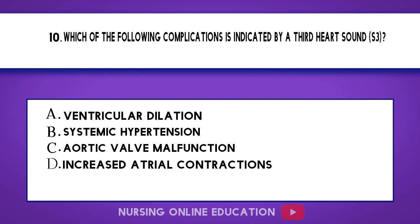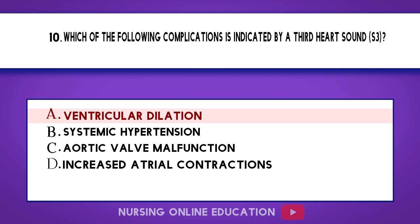Question 10. Which of the following complications is indicated by a third heart sound (S3)? A. Ventricular dilation. B. Systemic hypertension. C. Aortic valve malfunction. D. Increased atrial contractions. The answer is option A: Ventricular dilation.